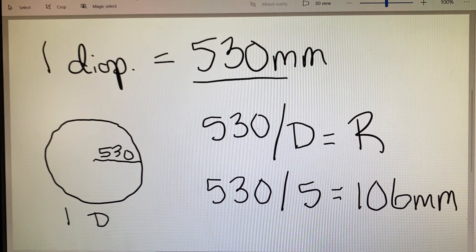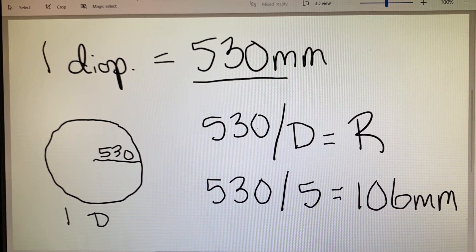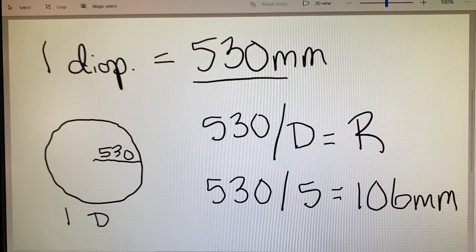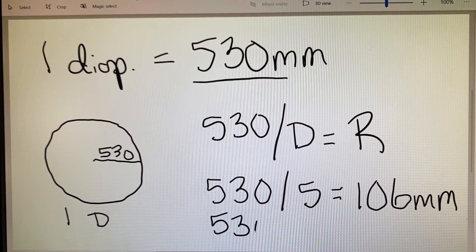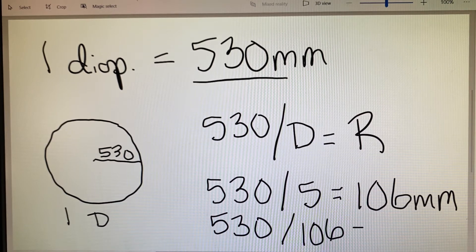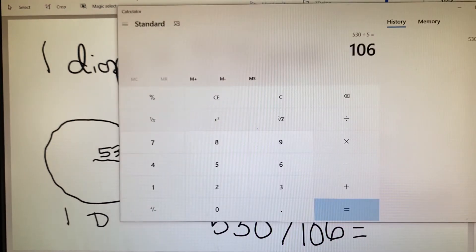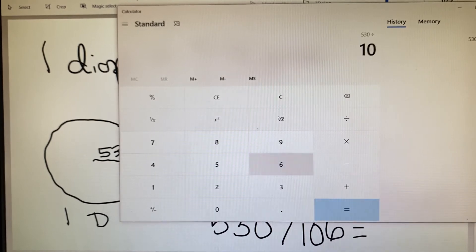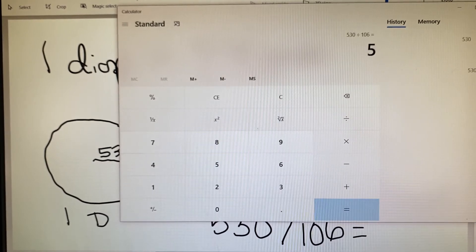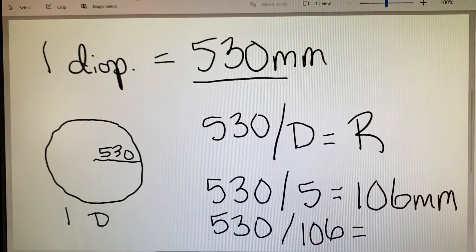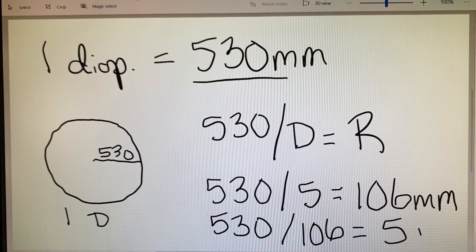In turn, if they asked us to determine the power of a lens given the radius of curvature, we can apply that same formula. We can say 530 divided by the radius of 106. If we plug that into our calculator, 530 divided by 106 equals 5. So we've been able to work this equation in both directions.